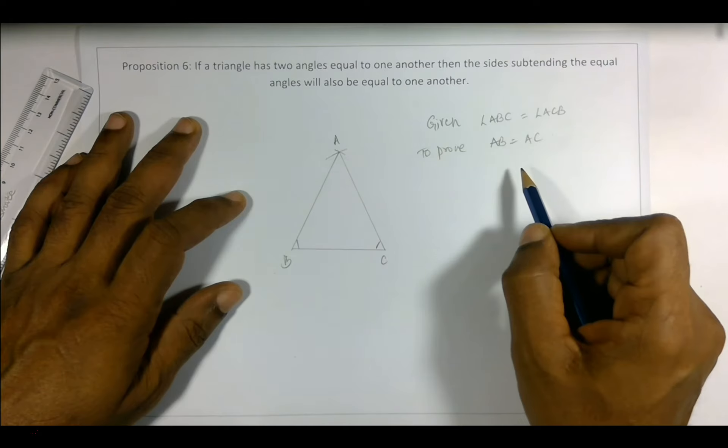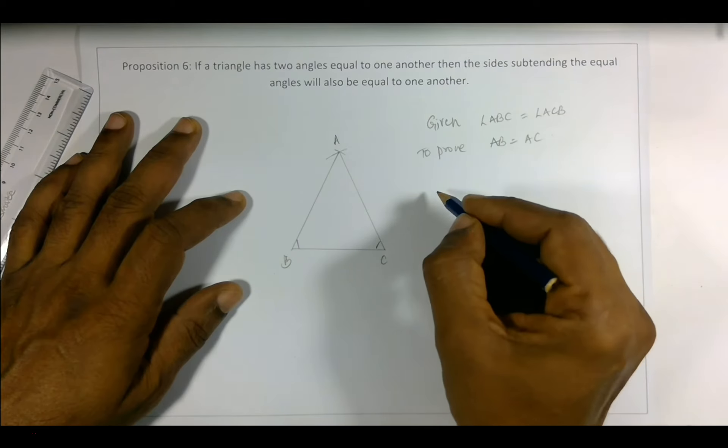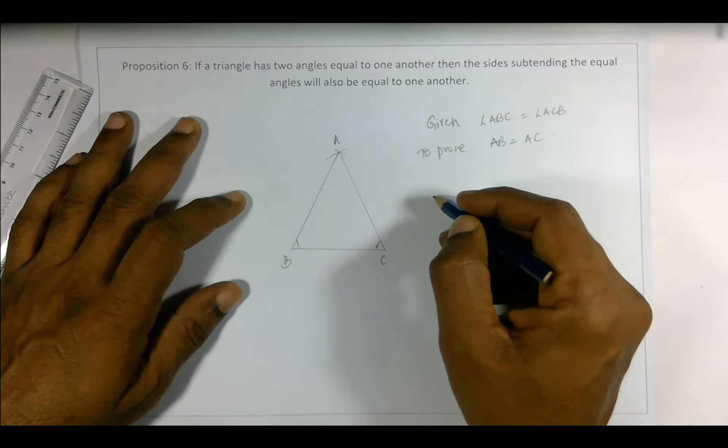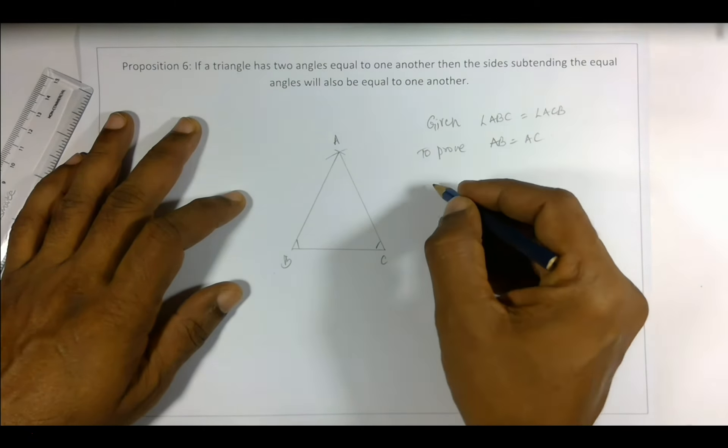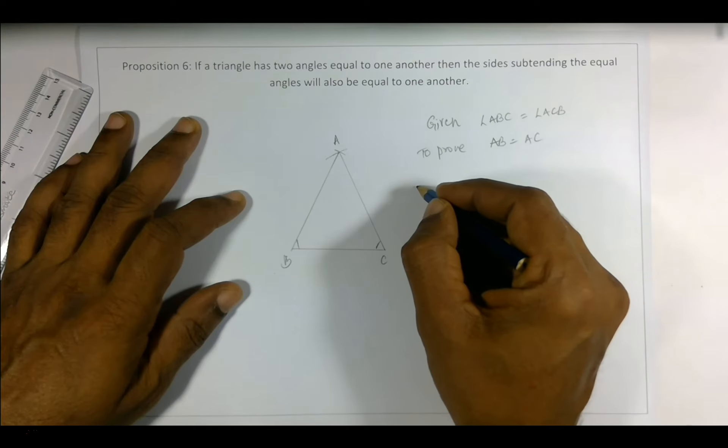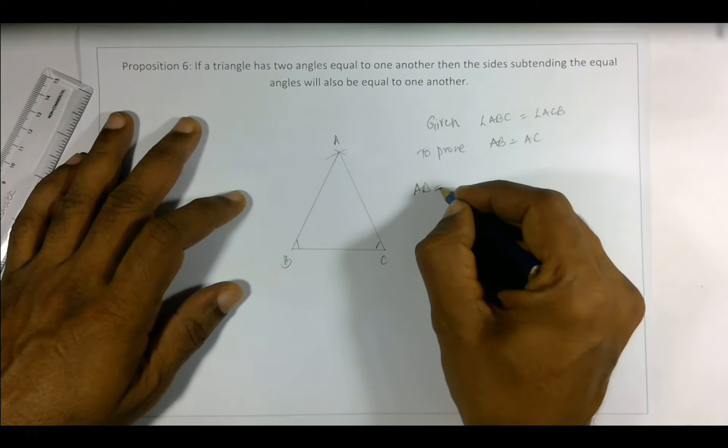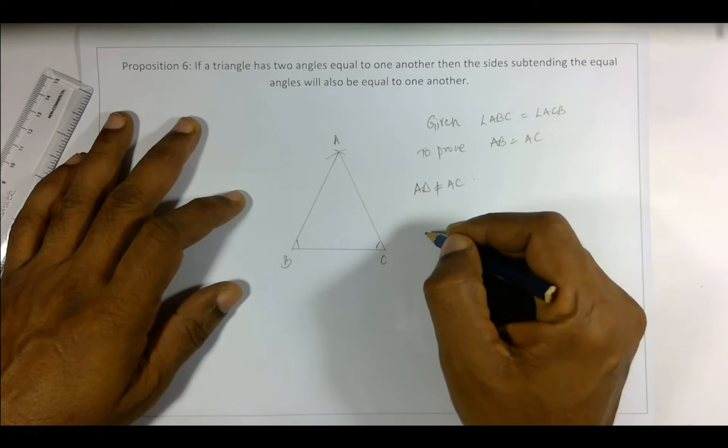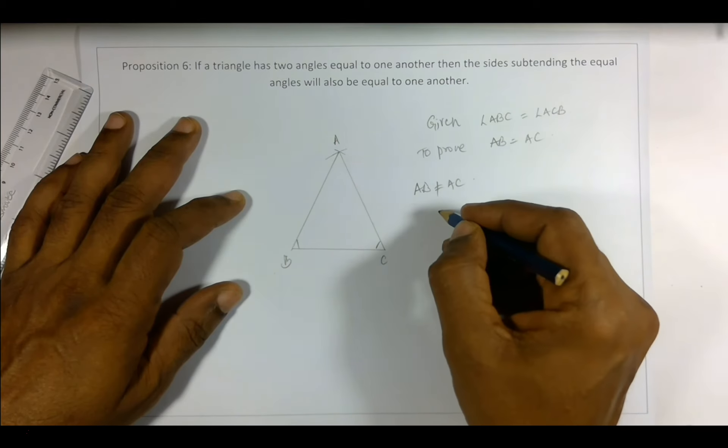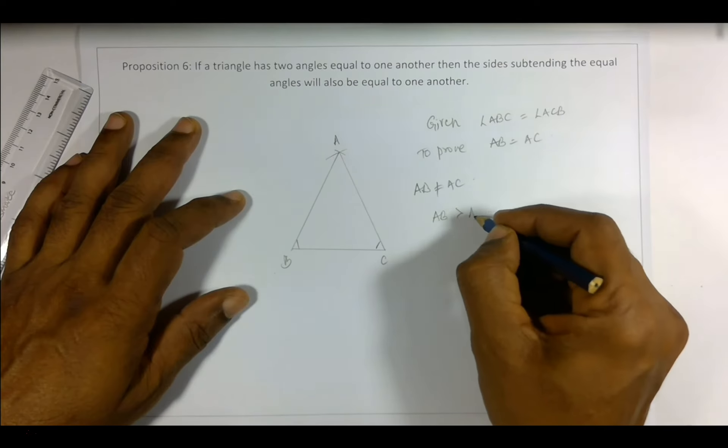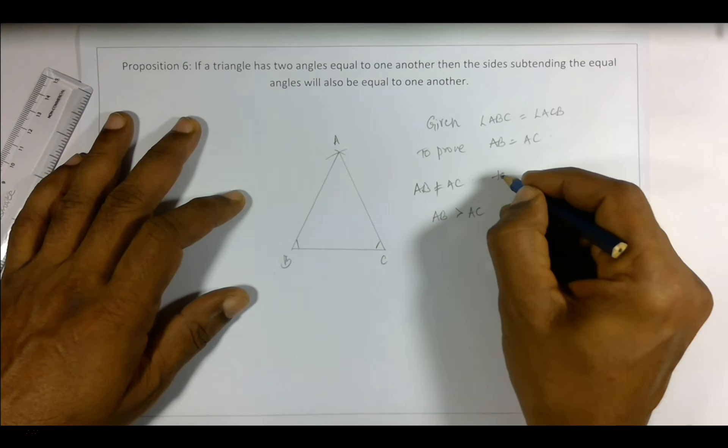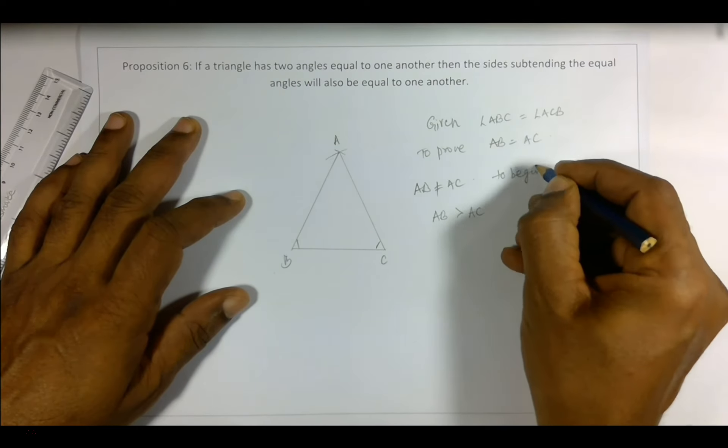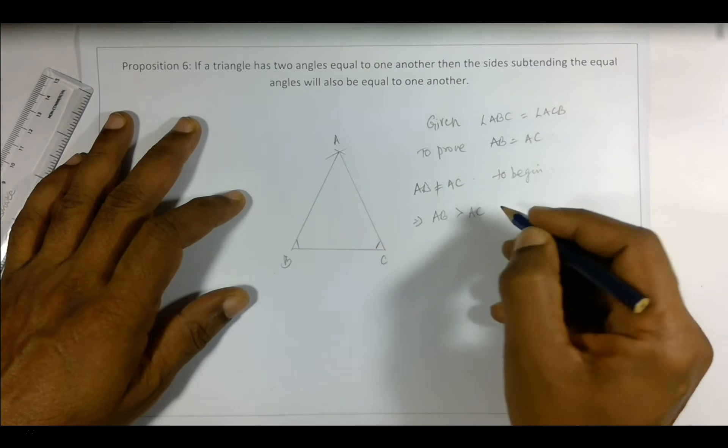This leads to some contradiction. So this is called proof by contradiction. Let's begin by saying AB is not equal to AC, which means one of them has to be greater. So let's choose any one: AB is greater than AC. This is to begin, which basically implies either AB is greater than AC or AC is greater than AB.